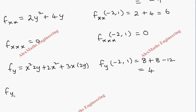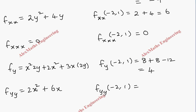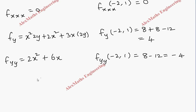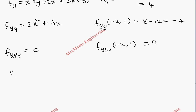Now fyy: differentiating fy with respect to y gives fyy = 2x² + 6x (the term 2x² vanishes, leaving 6x). Evaluating at (-2, 1): 2(-2)² + 6(-2) = 8 - 12 = -4. So fyy(-2, 1) = -4. Differentiating again gives fyyy = 0.